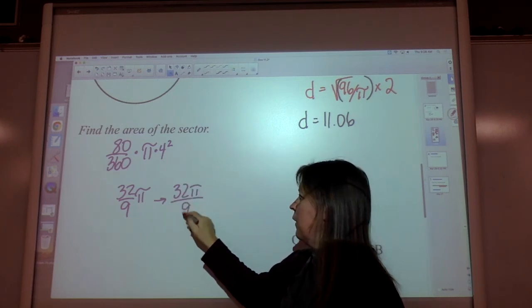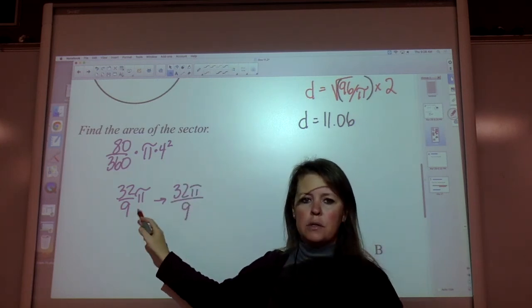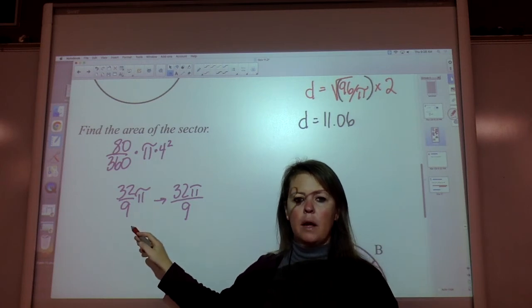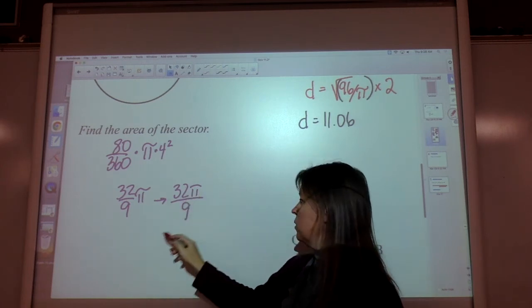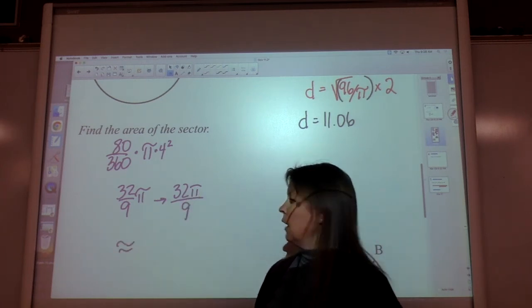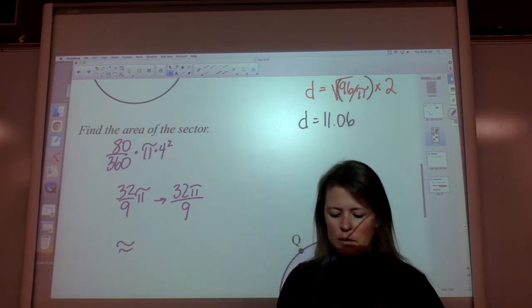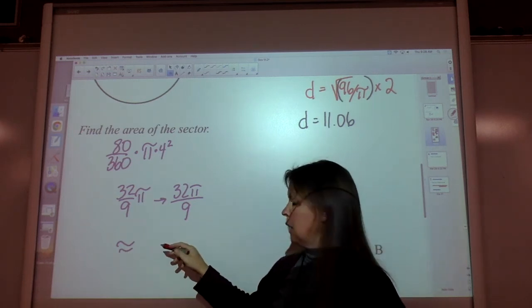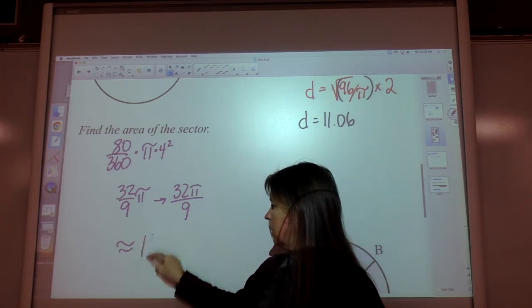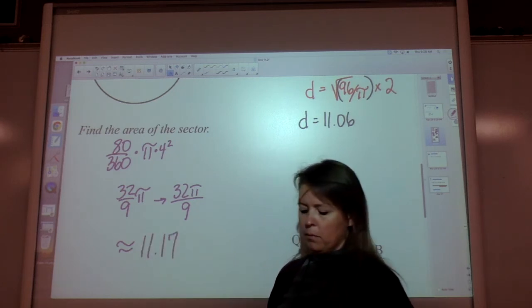Your preference, not mine on that. How do you like to write it? 32 over 9 times π, or 32π over 9. If they're looking for the approximate answer, you would multiply that out. Times π, rounded to the nearest hundredth, is 11.17.